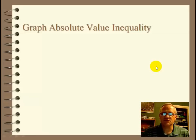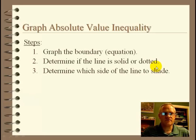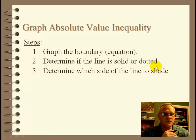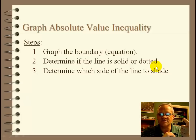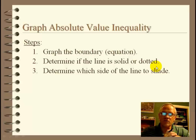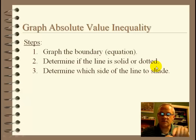Now let's look at graphing an absolute value inequality. The steps are pretty much the same: graph the boundary, determine if the line is solid or dotted, determine which side of the line to shade. The only difference is that an absolute value graph is going to be a V-shape.